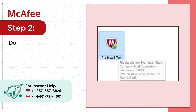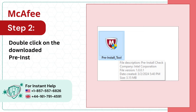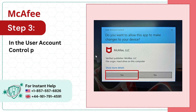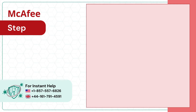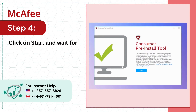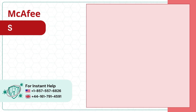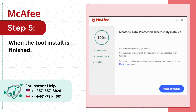Step 2: Double click on the downloaded pre-install_tool.exe file. Step 3: In the user account control pop-up, tap yes. Step 4: Click on start and wait for the process to complete. Step 5: When the tool install is finished, try installing McAfee again.